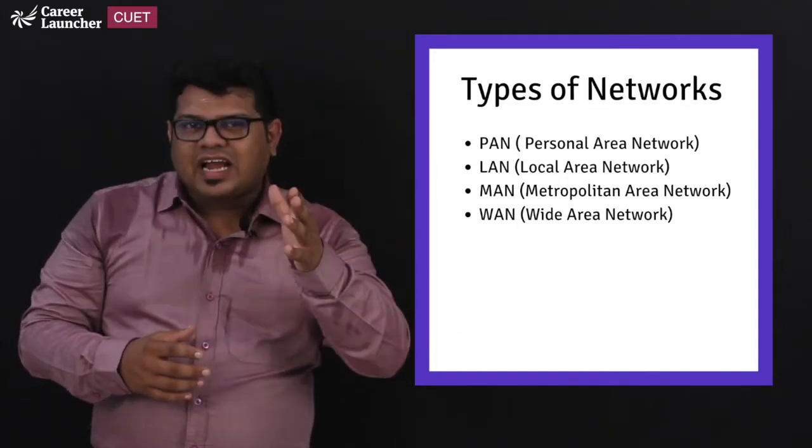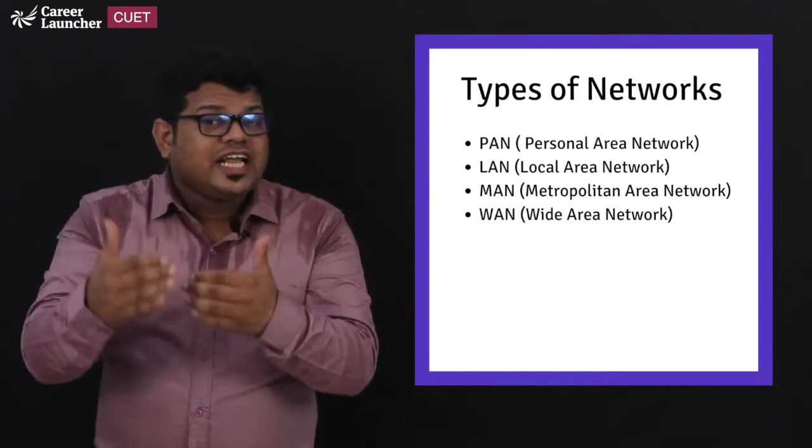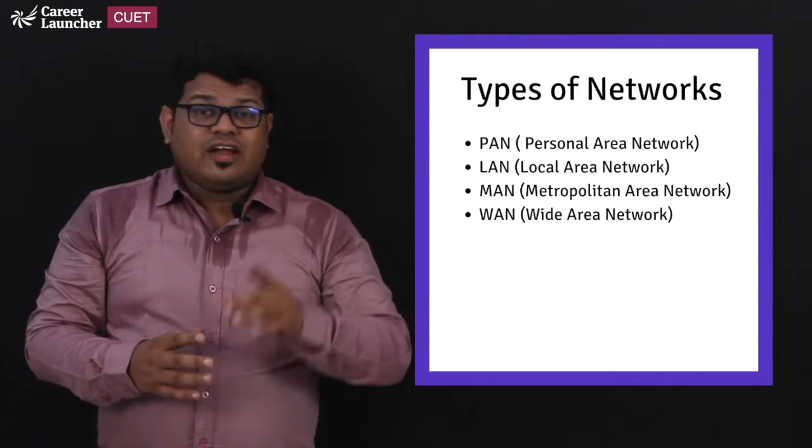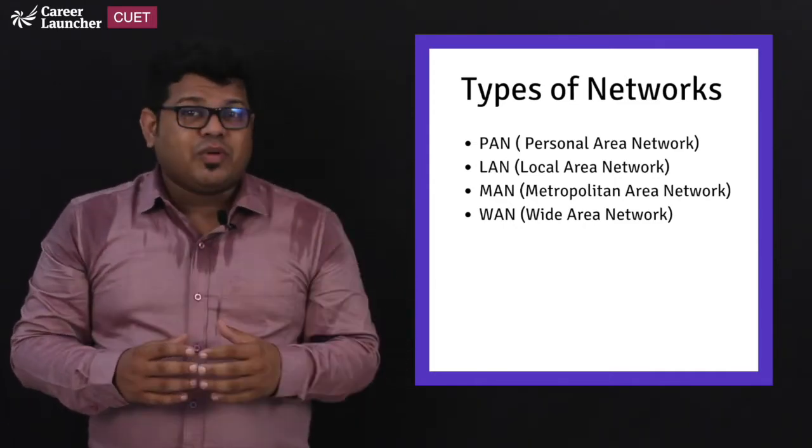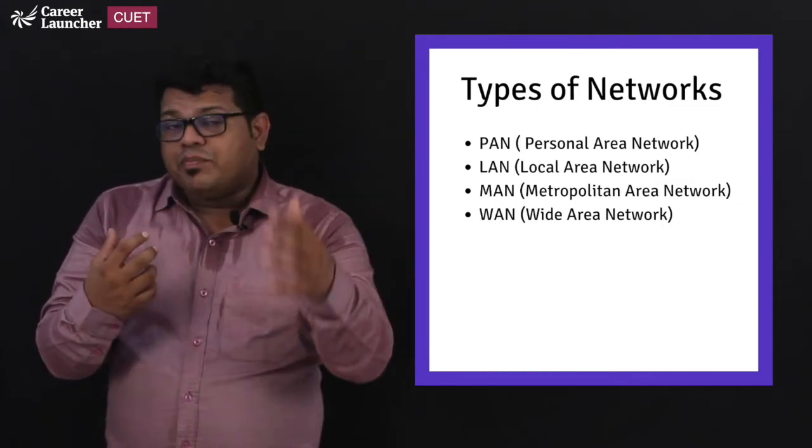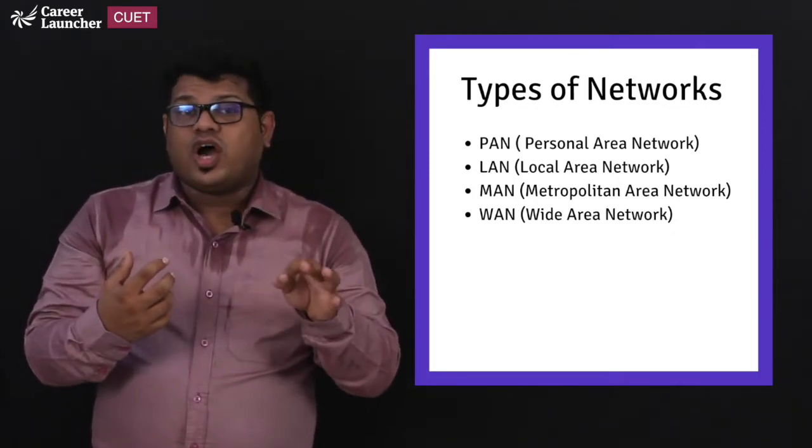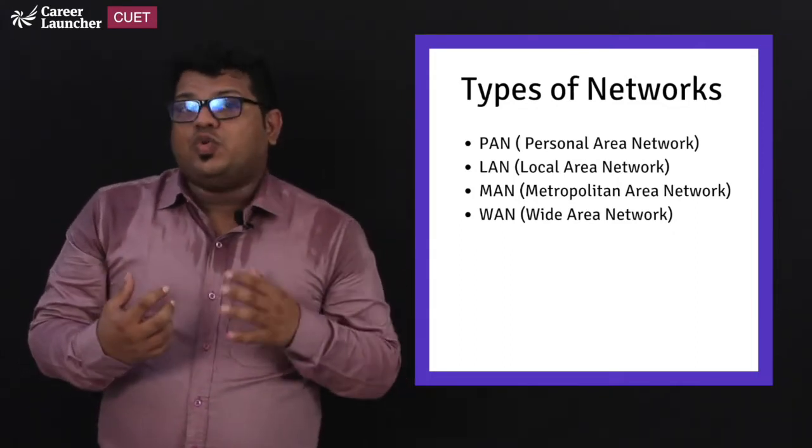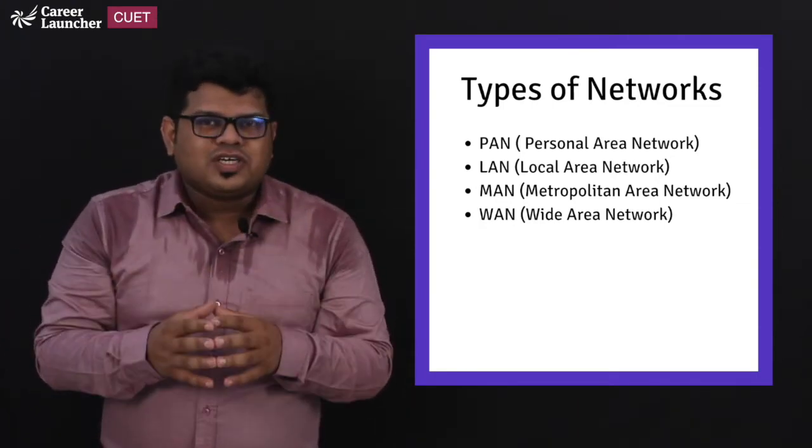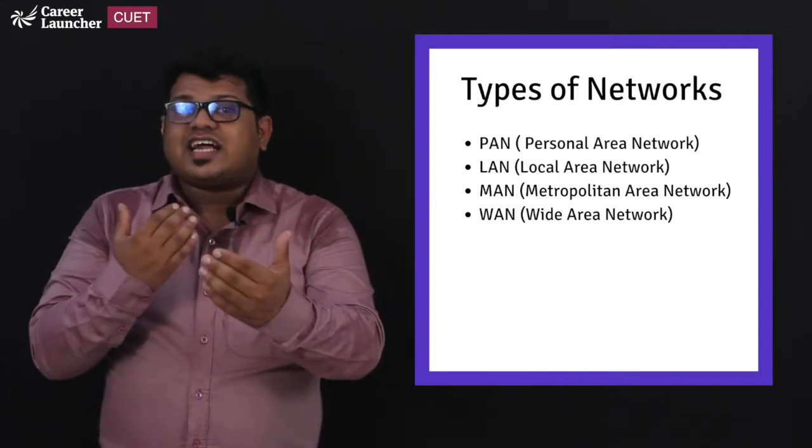So coming to PAN which is called as personal area network. This happens in a very short range communication. The best example that I could give you: if it is a wired one you can take a USB cable. We are connecting a mobile phone to a computer or a laptop using a USB cable. And that is the best example for a personal area network. And then if it is wireless, Bluetooth. So Bluetooth is the best example to connect devices and transfer data.